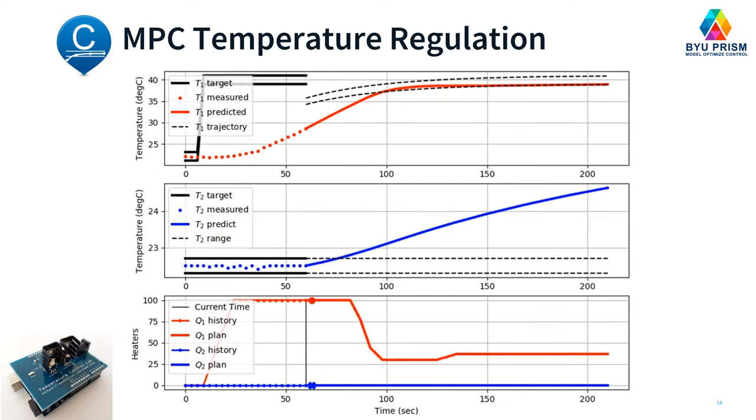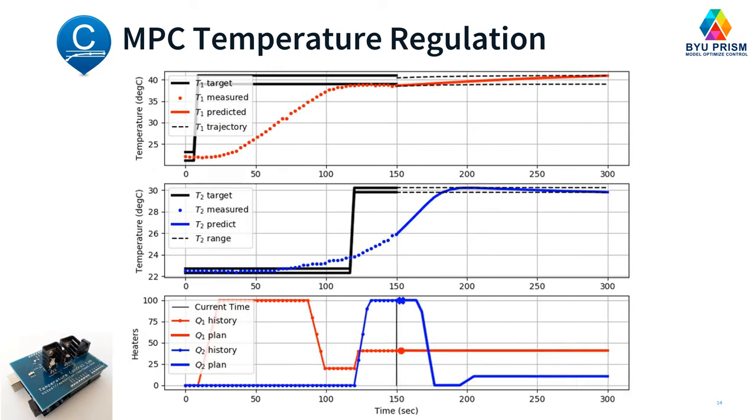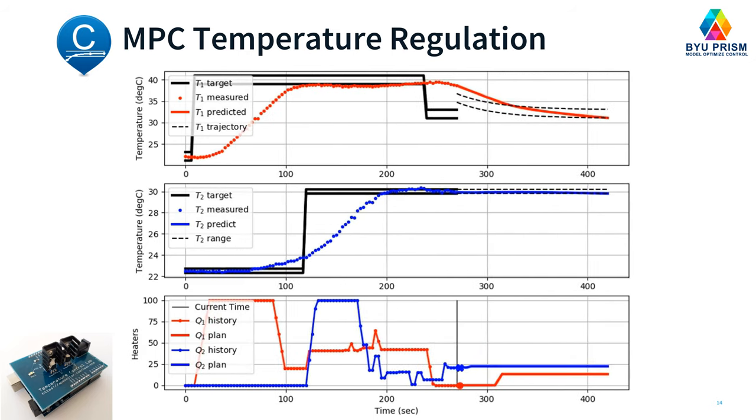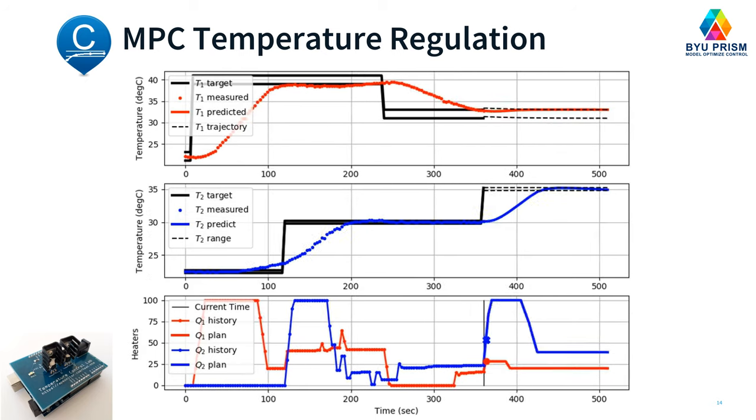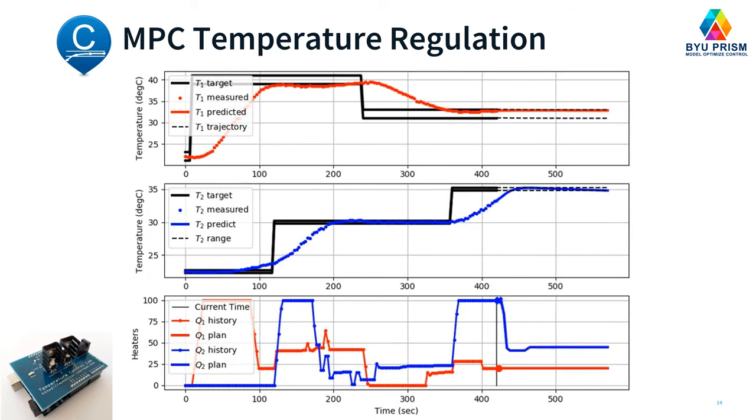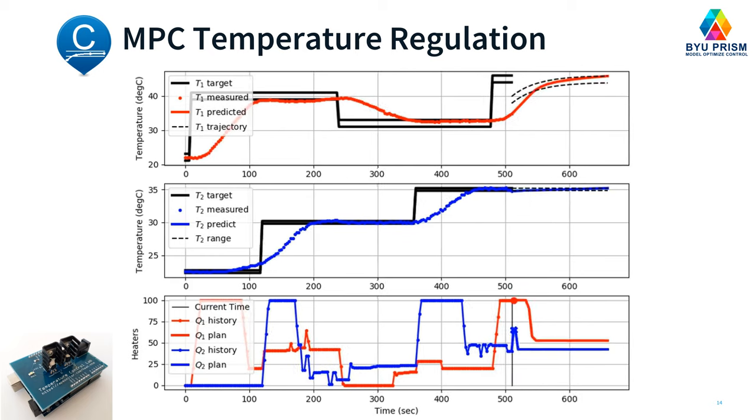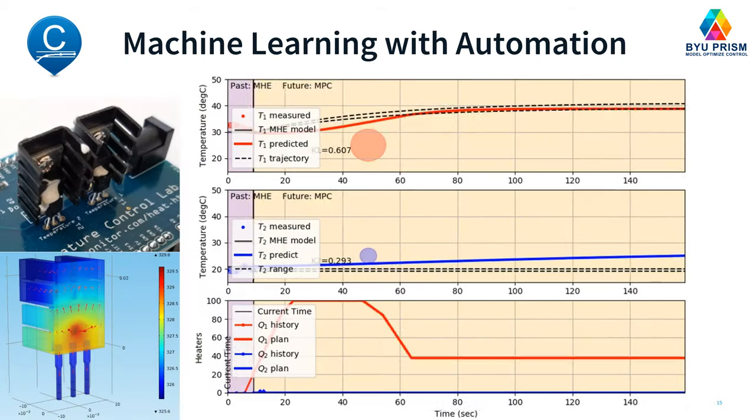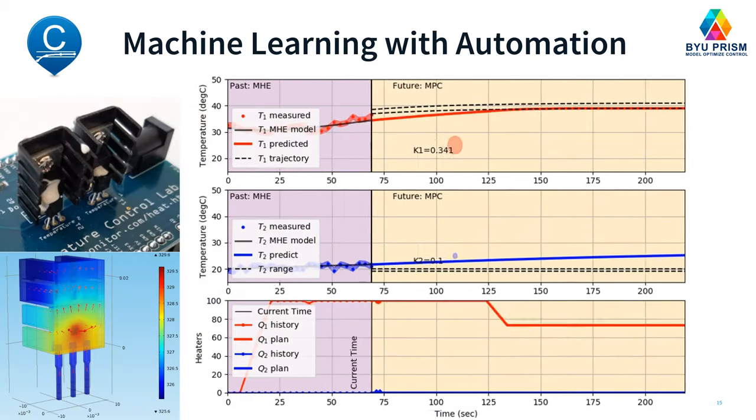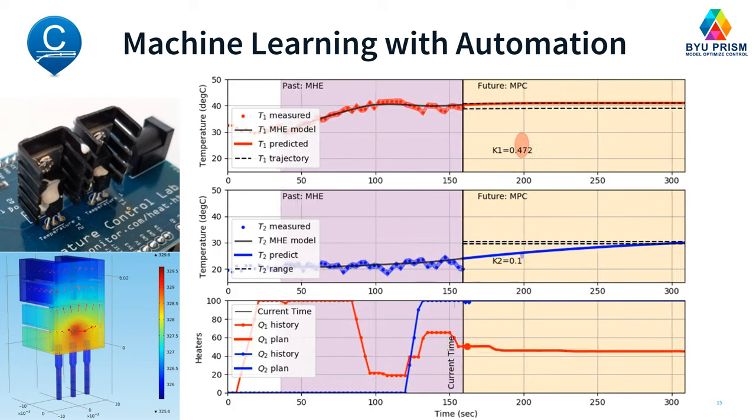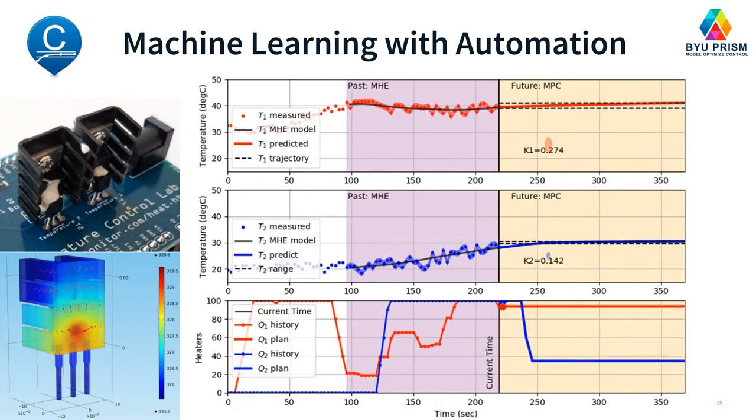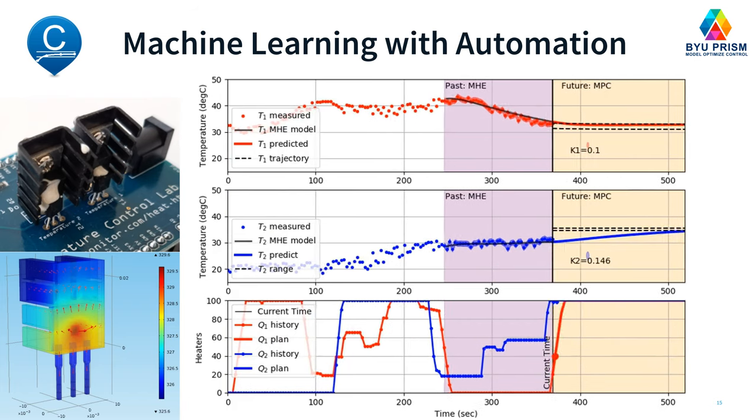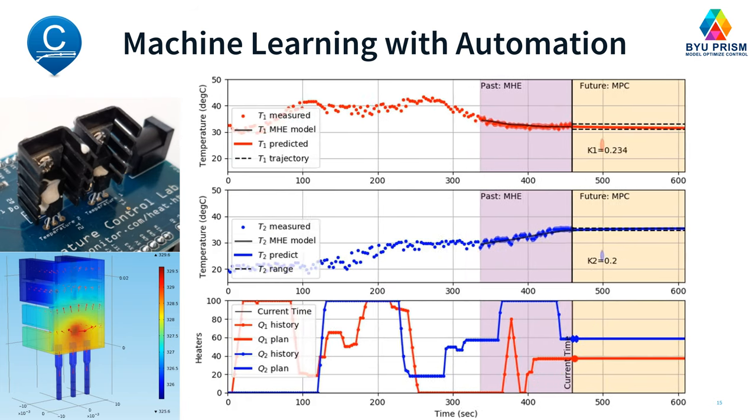So this is an example with that temperature control lab device. Looking forward into the future with the prediction horizon, then also on the very bottom, you can see the move plan, where you can see what the heaters are planning to do 10, let's see, about two minutes in advance. We're also going to combine that with moving horizon estimation, or Kalman filters, to do an estimation of the current model state and parameters in the model. We'll then use that to then improve our model predictive control.